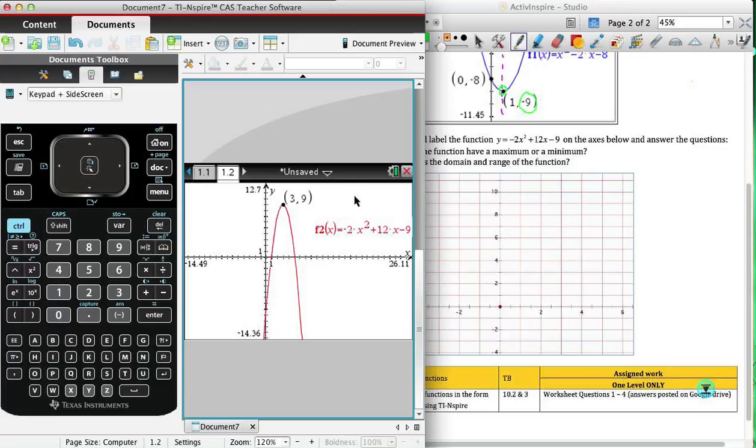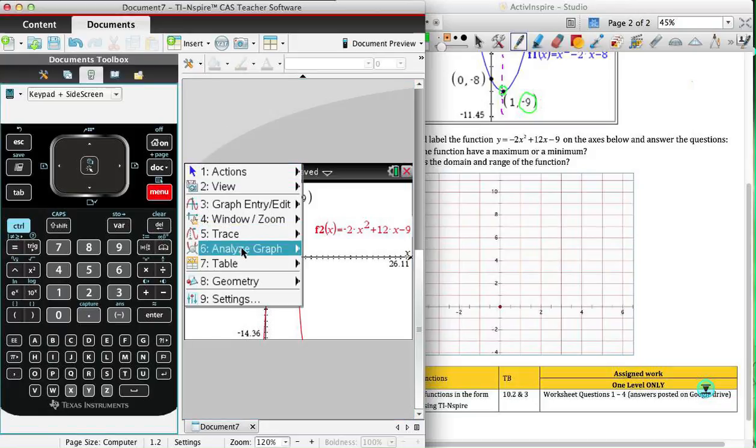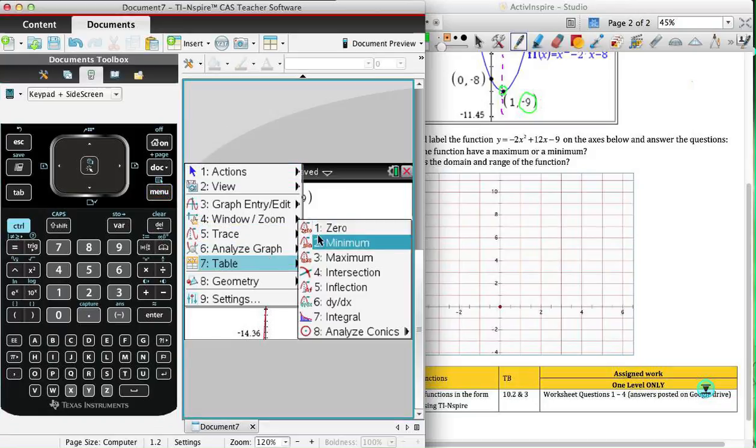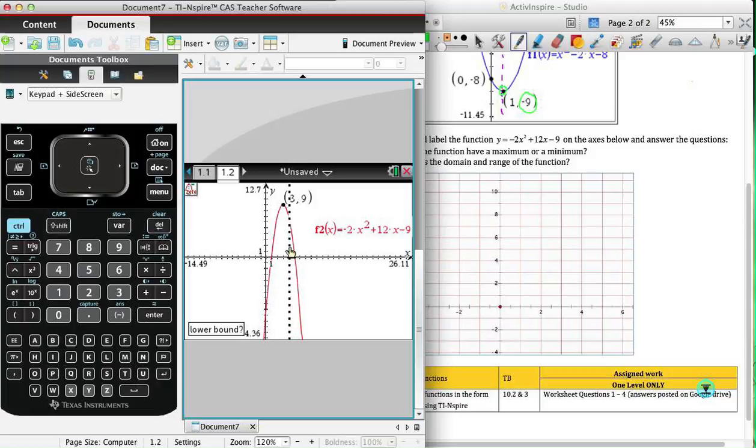First I'll take care of the x-intercept, so I'm going to analyze graph, look for a zero, point to the left, point to the right, and there's my first zero. This time you'll see that it's not producing a whole number; in fact it's a decimal. This is quite common with parabolas. 5.12.